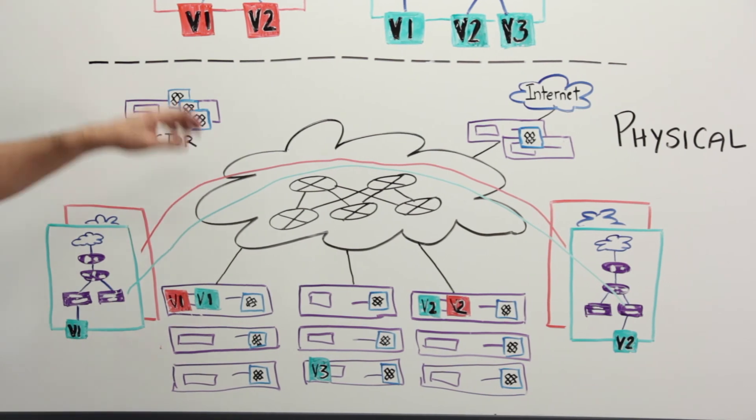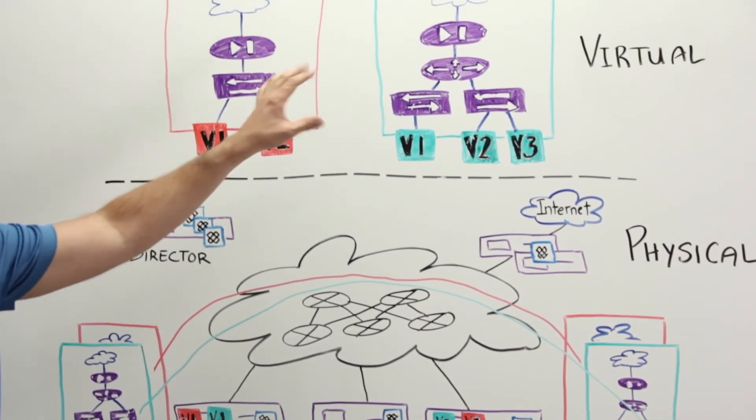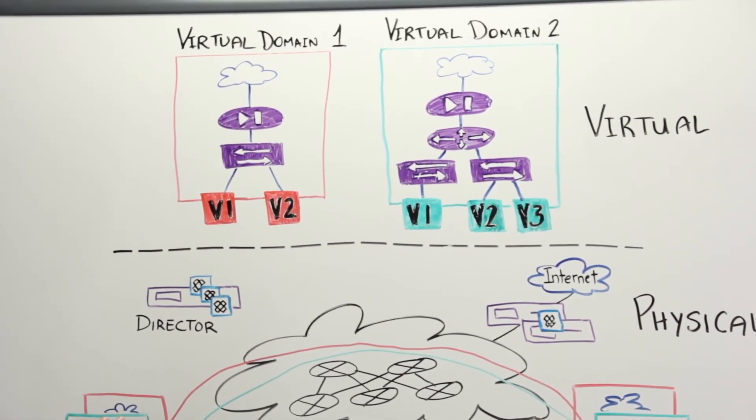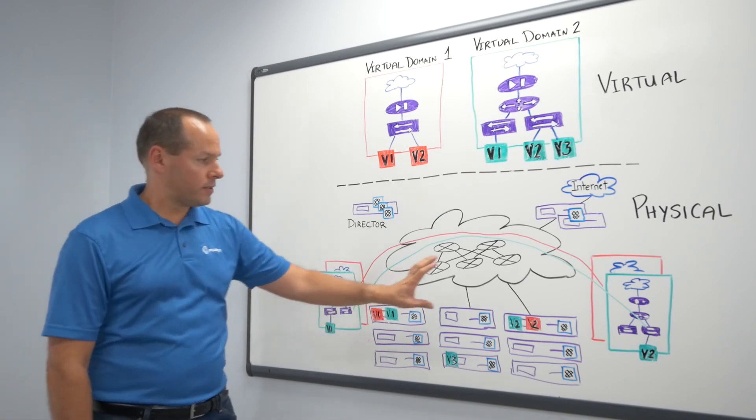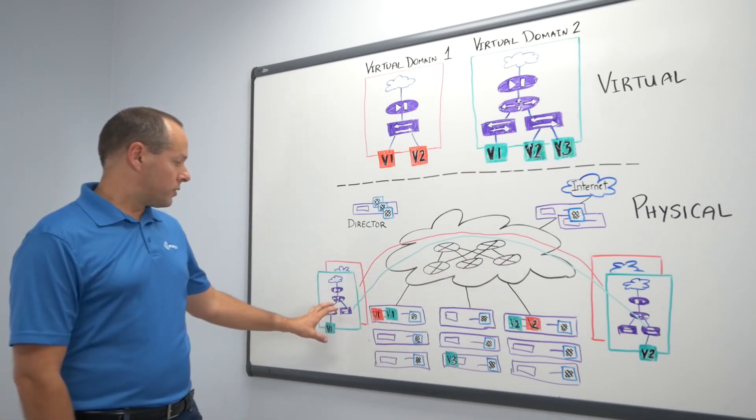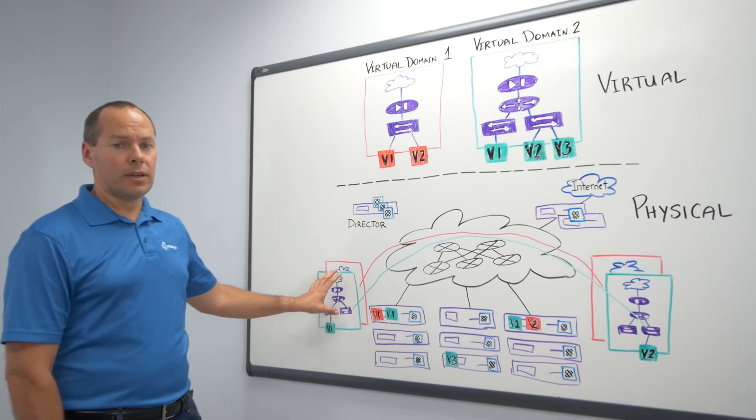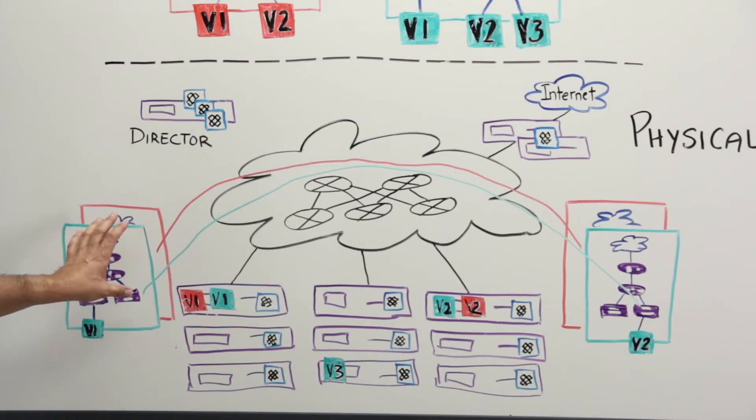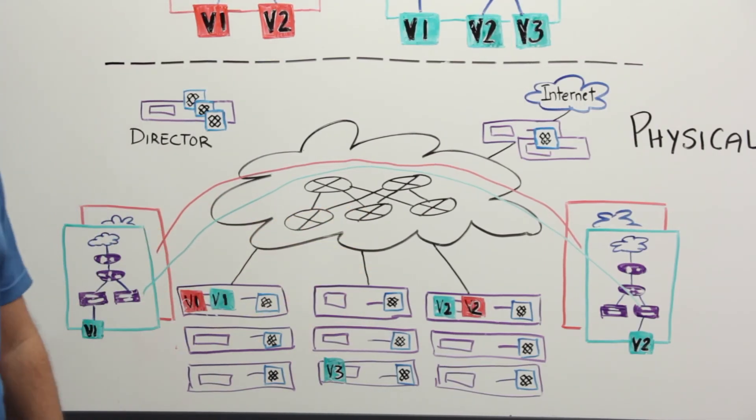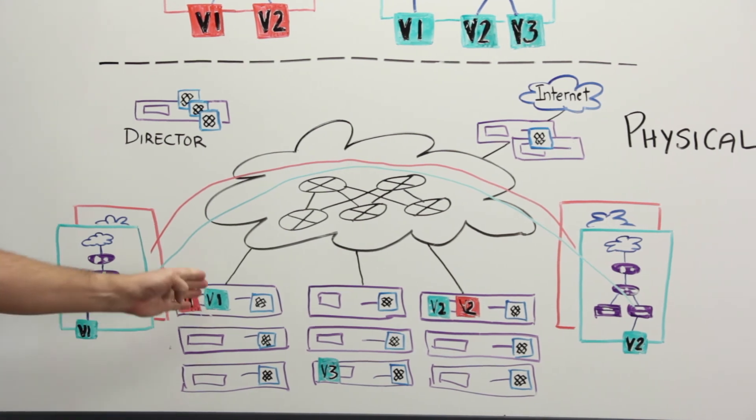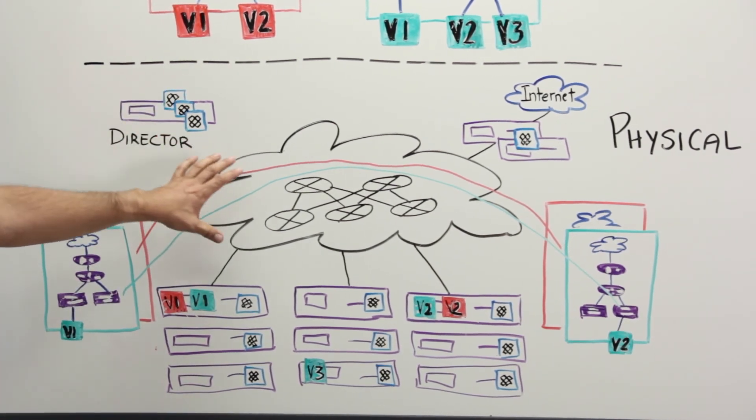As you can see, we have two very different topologies rendered at the same time on two different hypervisors, providing connectivity to different virtual machines at the same time in a distributed way at scale to not influence any contention or any hairpinning in this architecture.